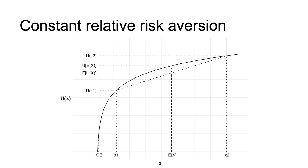One feature of constant relative risk aversion utility functions, such as log utility, is that people become less risk averse — as measured by absolute risk aversion — as their wealth increases. For a bet of a certain sum, they will be more likely to accept that bet at higher wealth. This plot is of a utility function with constant relative risk aversion. You can see that as the level of wealth increases, the utility function becomes increasingly linear. This reduction in curvature reflects the declining absolute risk aversion and results in bets of fixed value being more likely to be accepted at higher wealth.